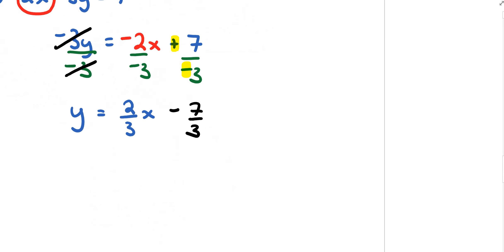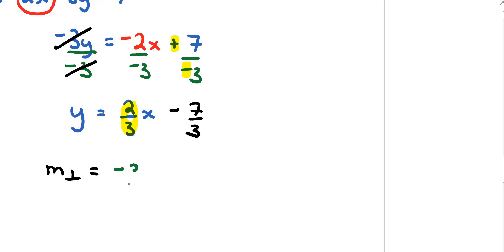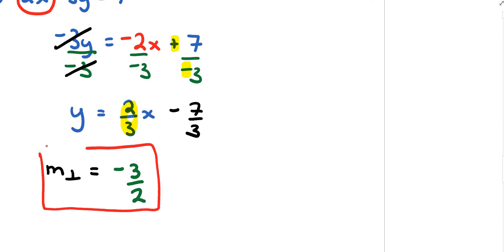Since the line is perpendicular to this one, the slope I'm looking for is the negative reciprocal of 2 over 3, which is negative 3 over 2. I'll definitely need this slope later in the problem.